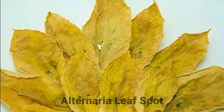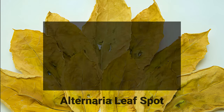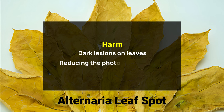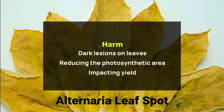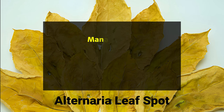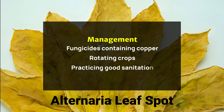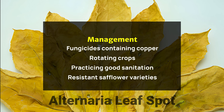Alternaria Leaf Spot harm: alternaria leaf spot causes dark lesions on leaves, reducing the photosynthetic area and impacting yield. Management: this can be managed by using fungicides containing copper, rotating crops, practicing good sanitation, and choosing resistant safflower varieties.